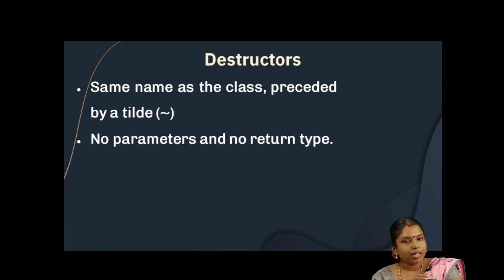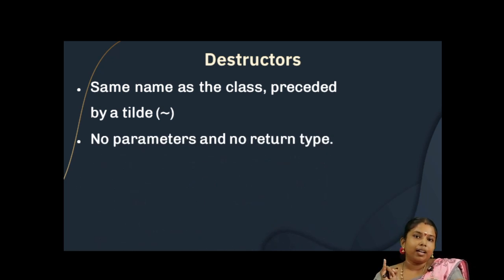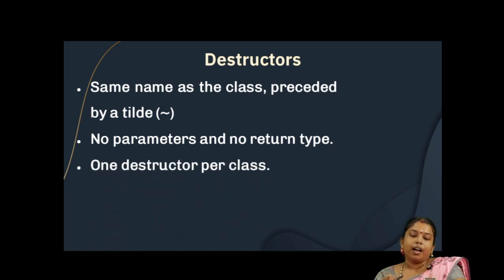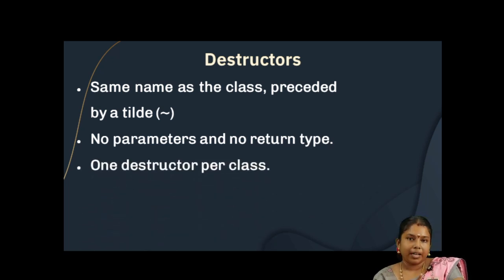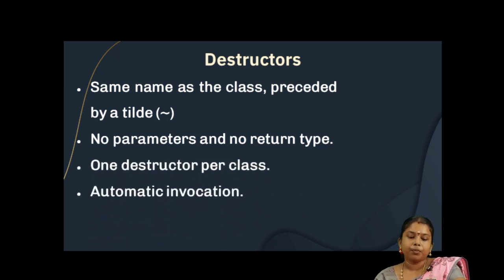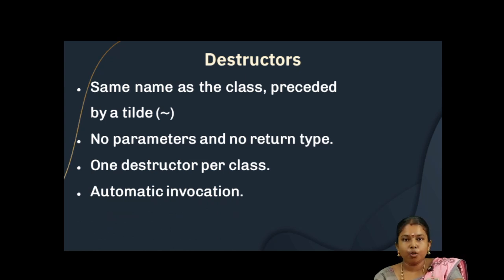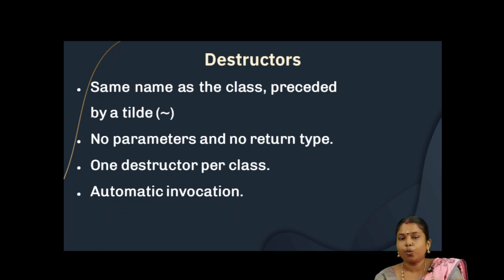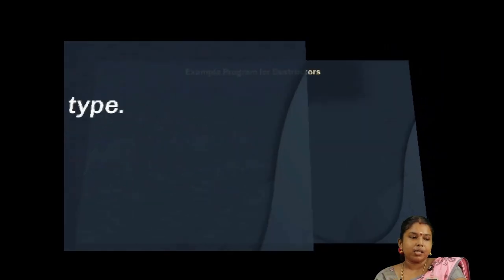The Destructor must not have any parameters and should not have any return type. There will be only one Destructor per class and it will be automatically invoked by the compiler — we do not need to invoke it explicitly.